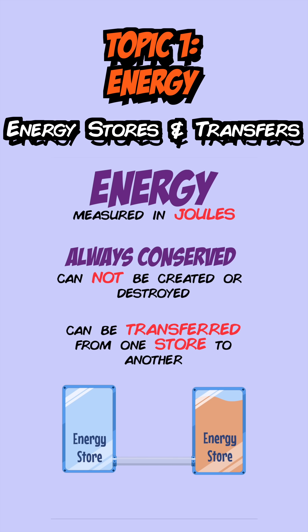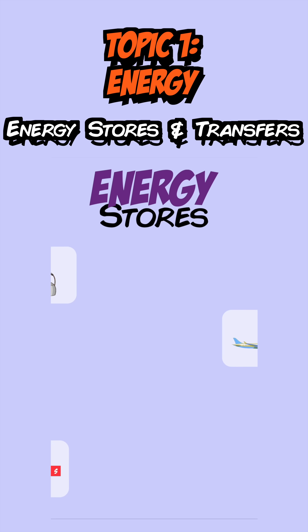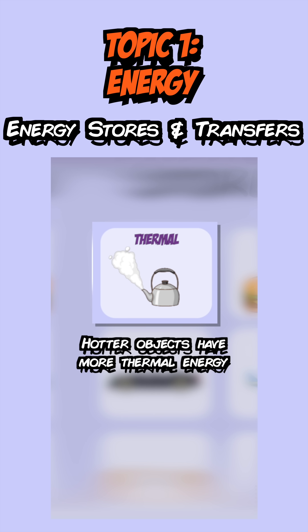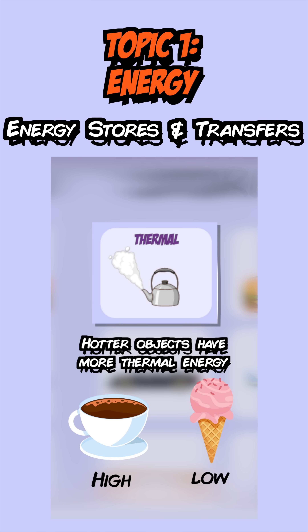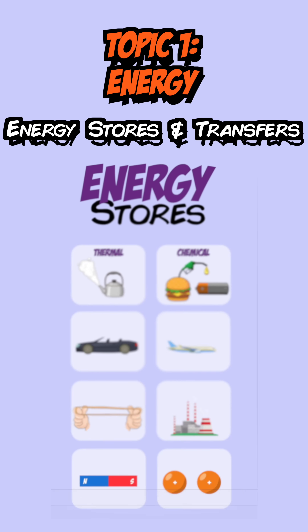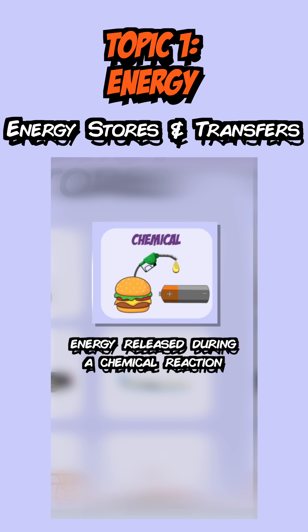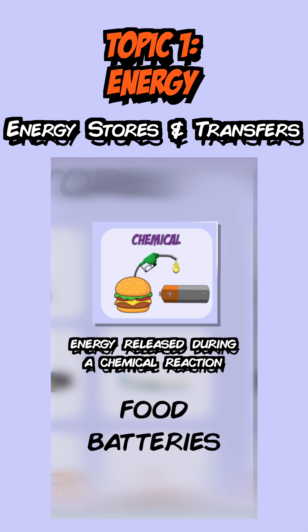There are eight different types of energy stores. Thermal energy stores — the hotter an object is, the more energy it has in its thermal energy store. Chemical energy stores is energy that's released during a chemical reaction; examples of these are food, batteries and fuels.